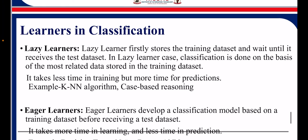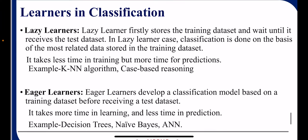In classification, there are two types of learners: lazy learners and eager learners. In case of lazy learner, classification is done on the basis of most related data stored in the training dataset.